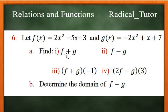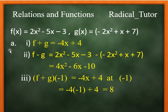Part a, I will find f plus g. So f plus g equals 2x squared plus negative 2x squared which is 0. Negative 5x plus x which is negative 4x. Negative 3 plus 7 which is 4. So f plus g equals negative 4x plus 4.